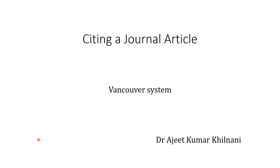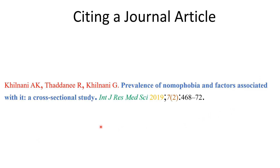There are different methods of citing a book, citing a chapter of a book, or citing an online resource material. But in this particular video, I will be describing only about citing a journal article using the Vancouver system. Whenever we cite a journal article using this system, we should know that there are six elements of the reference. Here I have depicted those six elements in different colors.